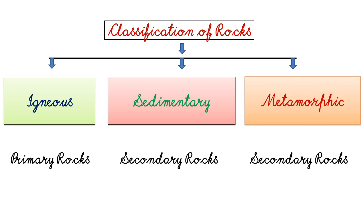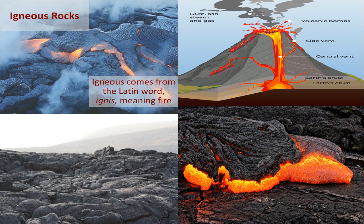Now let's discuss about igneous rocks. The word igneous has been derived from the Latin word ignis, which means fire. These rocks are of thermal origin and are associated with volcanic eruptions. The igneous rocks have been formed due to the cooling and solidification of hot and molten material called magma.